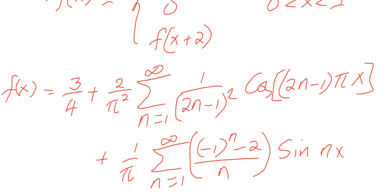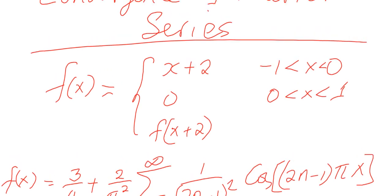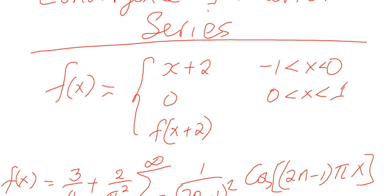Looking at this series, we see that for this function the discontinuity occurs at x = 0. If you find the left-hand limit — approaching 0 from values below 0, going from −1 toward −0.5 and toward 0 — you are in the interval between −1 and 0 where the function is defined by x + 2, so as you approach 0, the function approaches a value of 2.